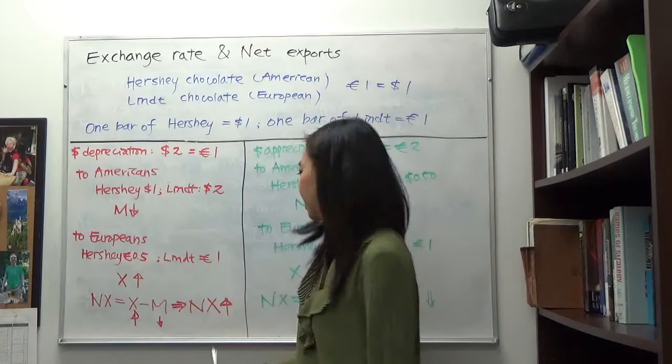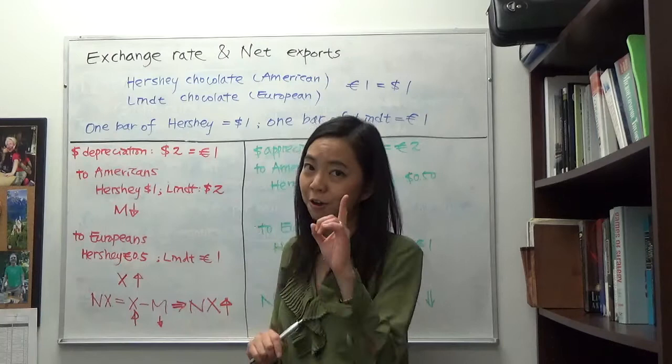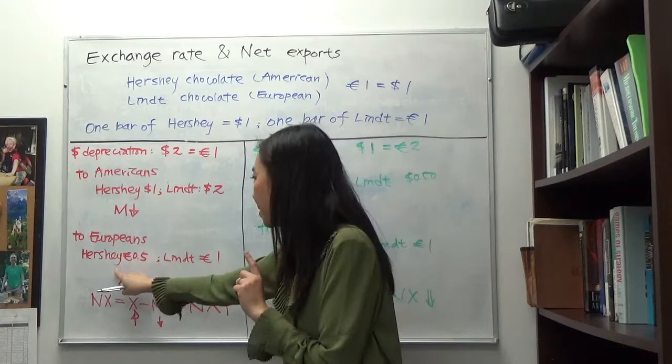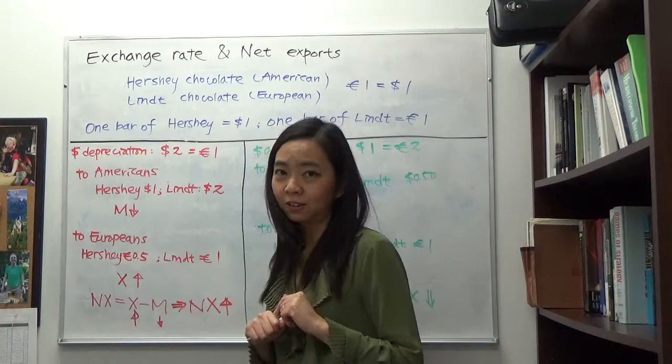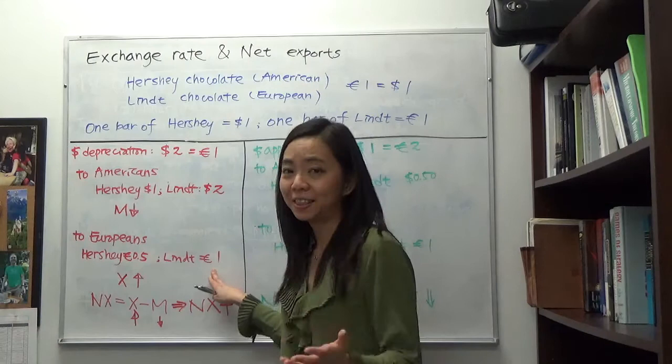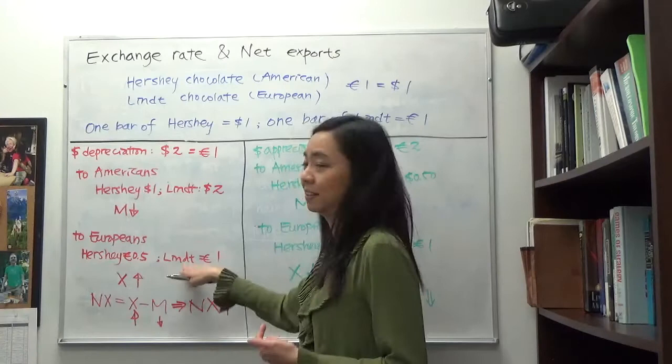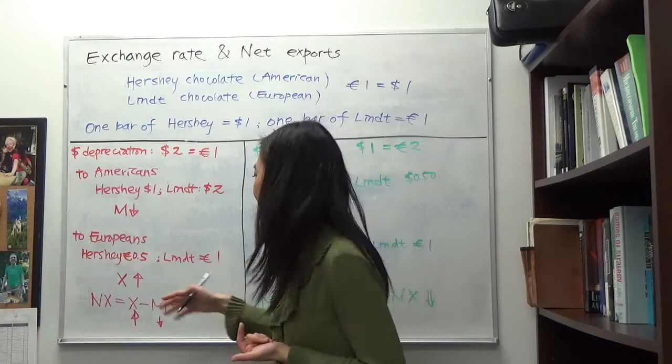For the Europeans, their Lindt chocolate still costs them one euro. But for Hershey chocolate — we know it's still one dollar — because the dollar depreciates, one dollar is only half a euro for Europeans. So a bar of Hershey chocolate now costs Europeans only 50 cents, compared to Lindt at one euro. Therefore, Hershey chocolate becomes more attractive to Europeans than Lindt, Europeans will be more keen to buy Hershey, and our exports are going to go up.